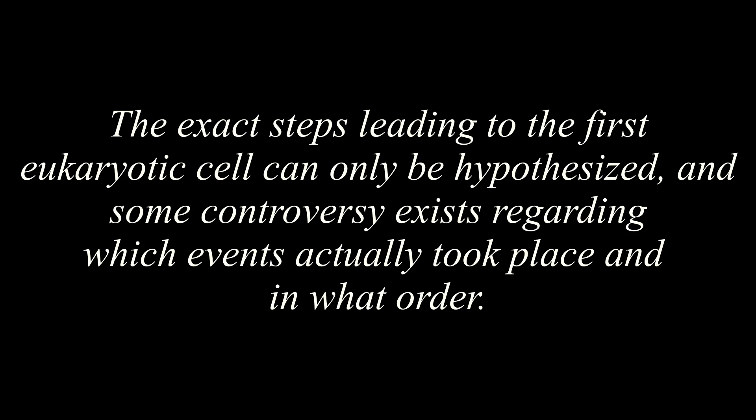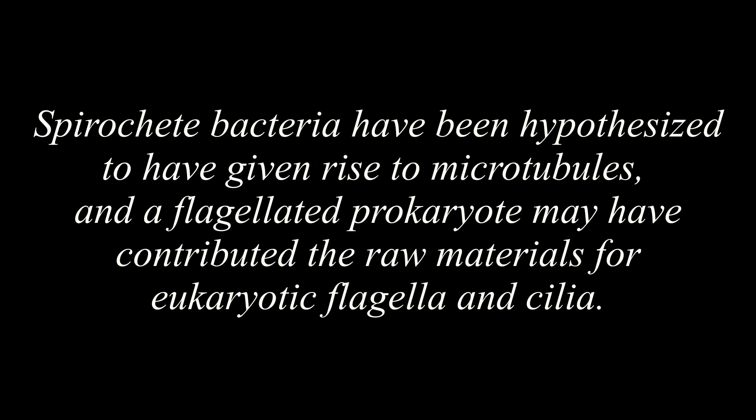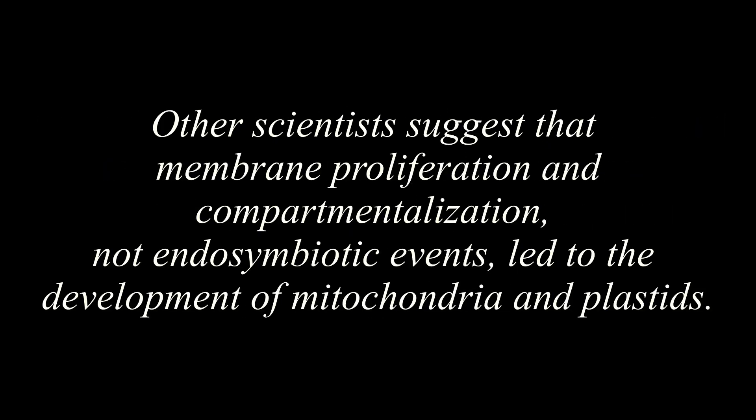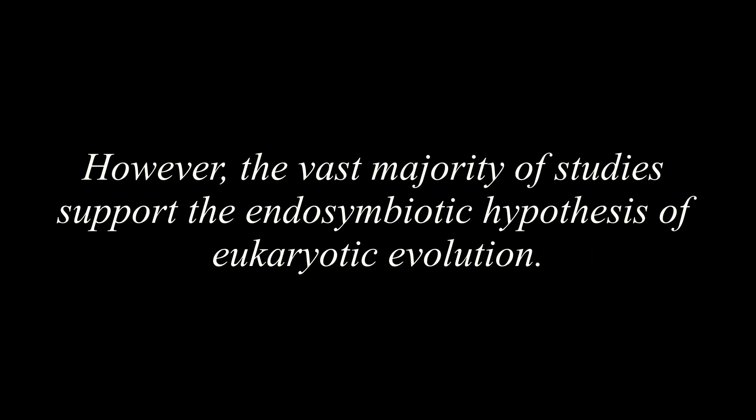The exact steps leading to the first eukaryotic cell can only be hypothesized, and some controversy exists regarding which events actually took place and in what order. Spirochete bacteria have been hypothesized to have given rise to microtubules, and a flagellated prokaryote may have contributed raw materials for eukaryotic flagella and cilia. Other scientists suggest that membrane proliferation and compartmentalization, not endosymbiotic events, led to the development of mitochondria and plastids. However, the vast majority of studies support the endosymbiotic hypothesis of eukaryotic evolution.